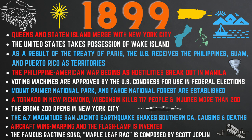Now we will cover the history of the year 1899. In 1899, Queens and Staten Island merged with New York City. The United States takes possession of Wake Island. As a result of the Treaty of Paris, the U.S. receives the Philippines, Guam, and Puerto Rico as territories. The Philippine-American War begins as hostilities break out in Manila. Voting machines are approved by the U.S. Congress for use in federal elections. Mount Rainier National Park and Tahoe National Forest are established. A tornado in New Richmond, Wisconsin kills 117 people and injures more than 200. The Bronx Zoo opens in New York City. The 6.7 magnitude San Jacinto earthquake shakes Southern California, causing 6 deaths. Aircraft wing warping and the flash lamp are invented. The famous ragtime song 'Maple Leaf Rag' is composed by Scott Joplin.